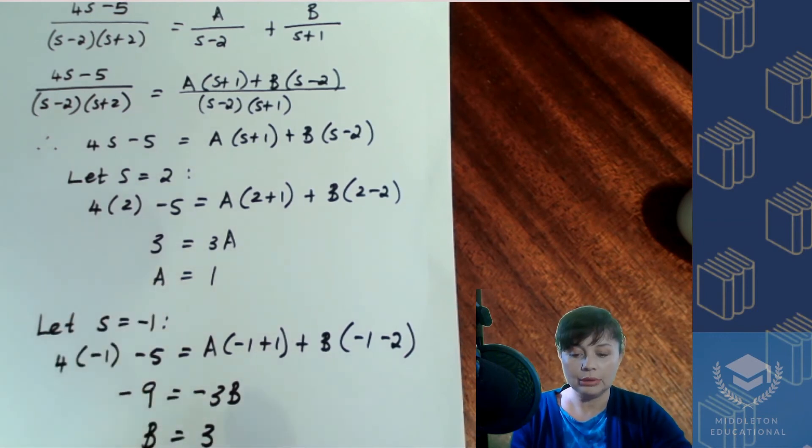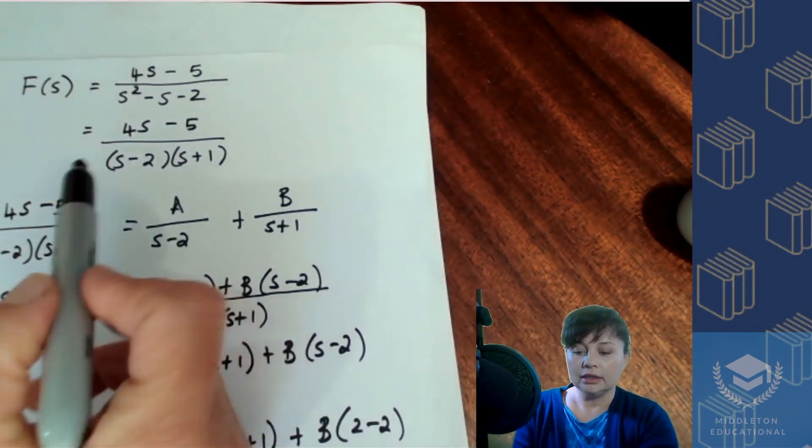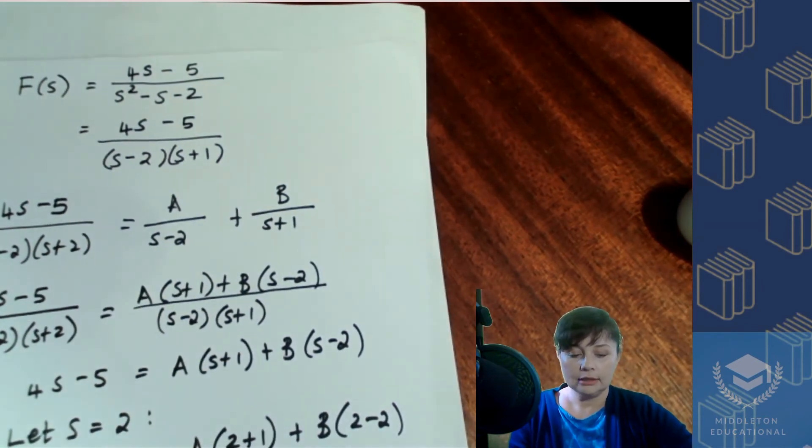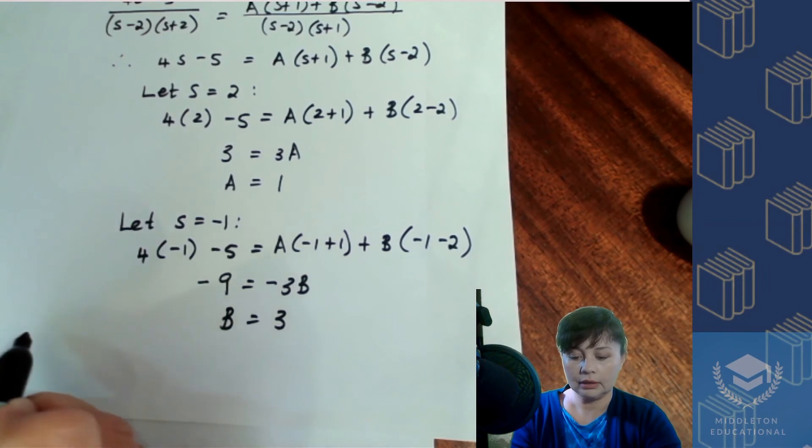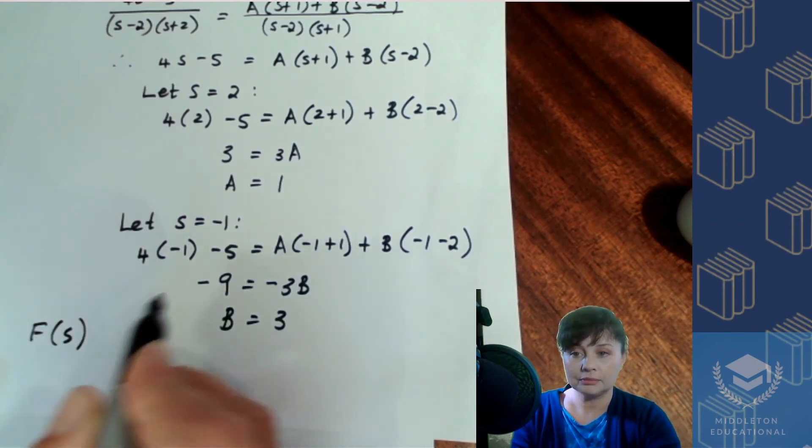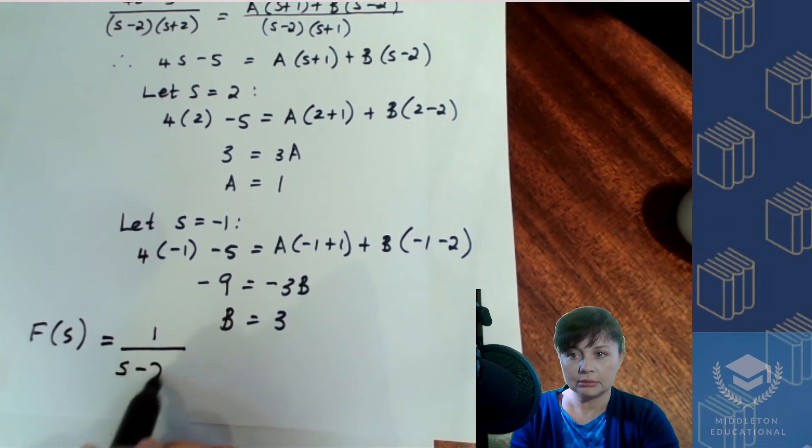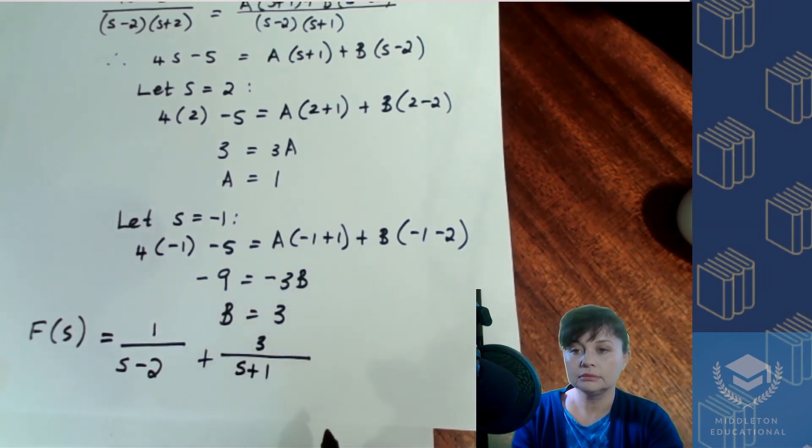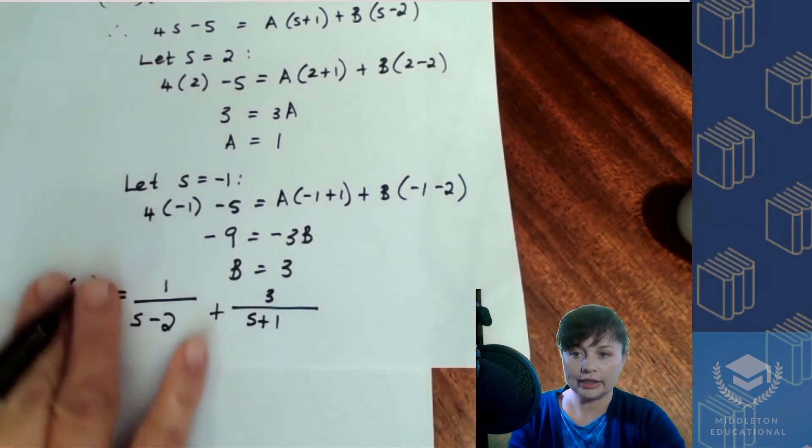So now we've got both a and b. That means that our f of s here can be written as these two terms. So we can then say f of s is equal to, a is 1, so it's going to be 1 over s minus 2 plus 3 over s plus 1. So there we've got a different form for f of s.